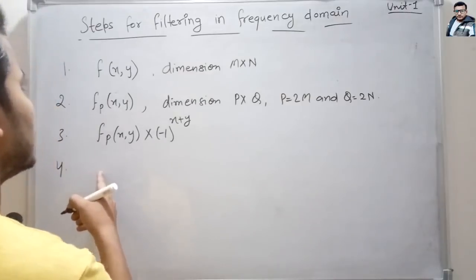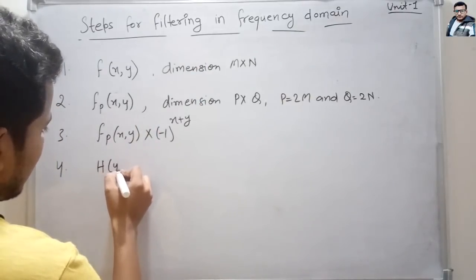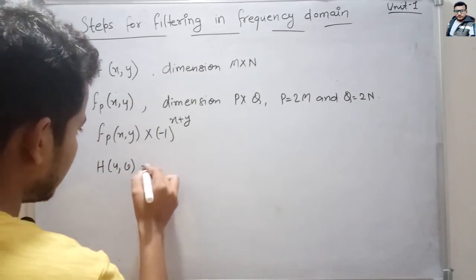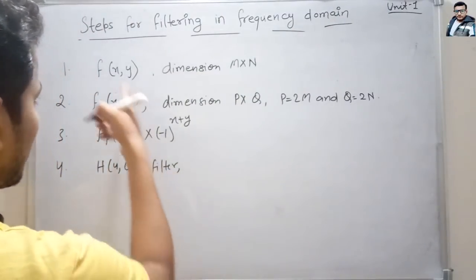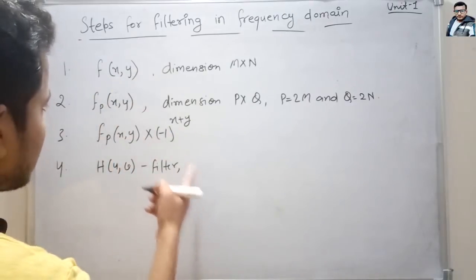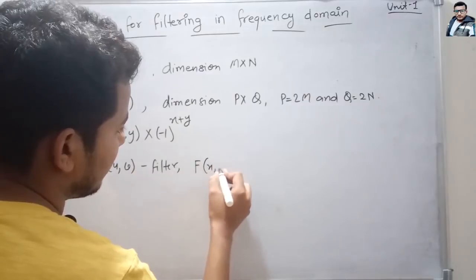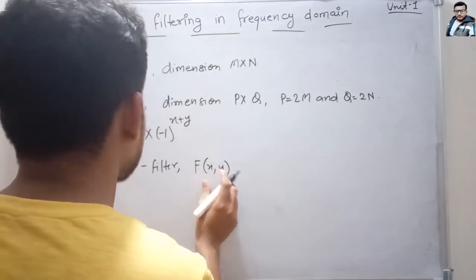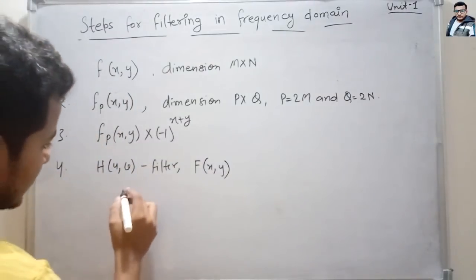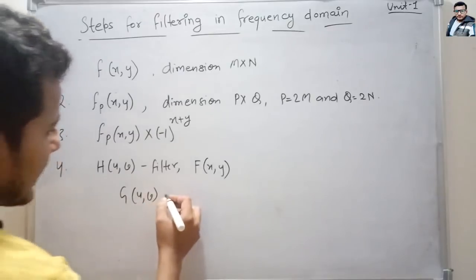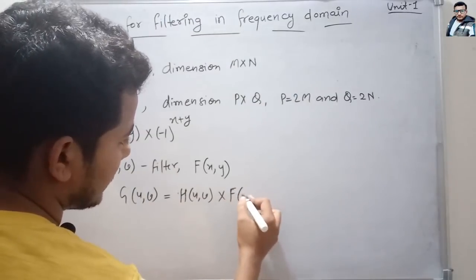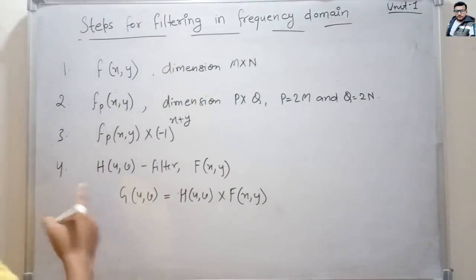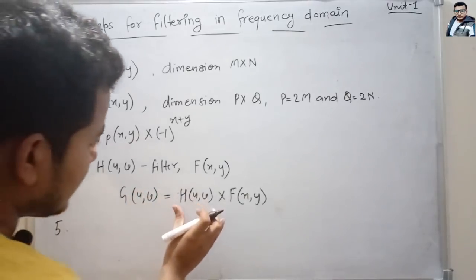Suppose we have a filter in the frequency domain, that is H(u, v). We then Fourier transform the image to form the Fourier transformation, capital F(u, v). In the fourth step, we find G(u, v) by multiplying H(u, v) with the Fourier transform F(u, v) of the image.